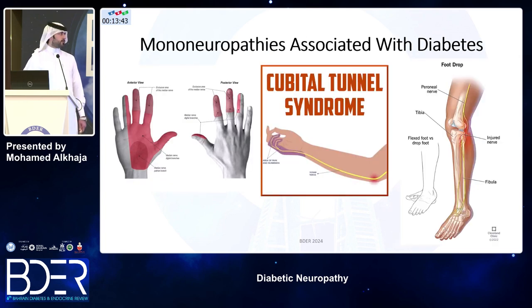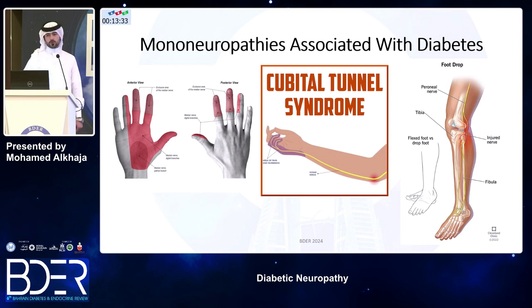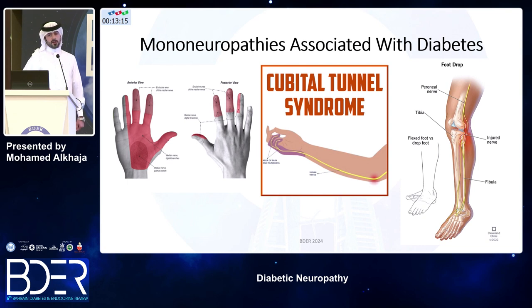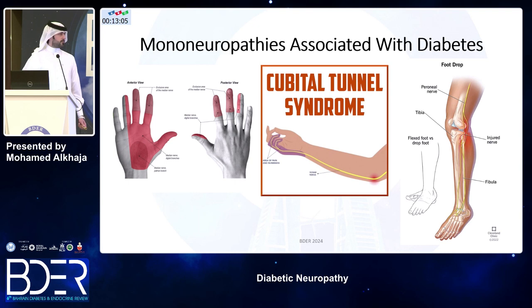Mononeuropathies associated with diabetes include carpal tunnel syndrome, cubital tunnel syndrome, and common fibular neuropathy at the fibular head, all of which are much more common in diabetic patients than in the general population. Carpal tunnel is managed with wrist splints, local corticosteroid injections, or surgery in severe cases. Cubital tunnel treatment includes lifestyle modification, corticosteroid injections, and surgery for severe cases. Common fibular neuropathy: mild cases recover spontaneously; severe cases require surgery.